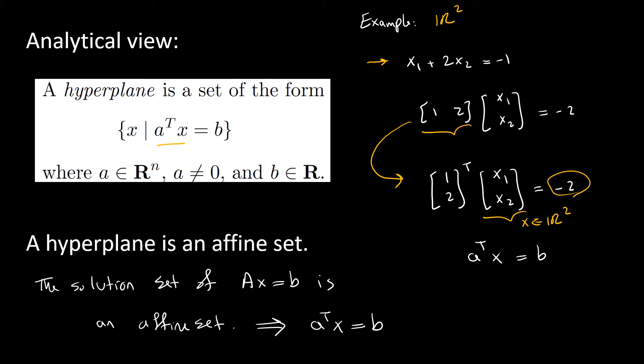Another useful fact is that a hyperplane is an affine set. If you don't know what an affine set is, please refer to my video on affine sets — I'll put a link in the description below. A hyperplane is an affine set because the solution set of a system of linear equations Ax = b is an affine set. Here, instead of capital A, we have a row vector which is a-transpose multiplied by x, so the points satisfying this equality form an affine set — these are the points of the hyperplane.